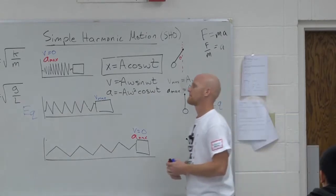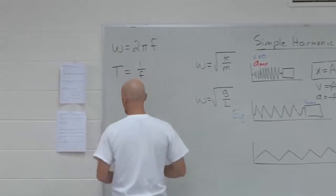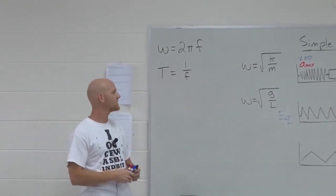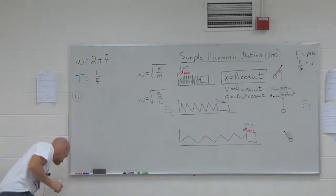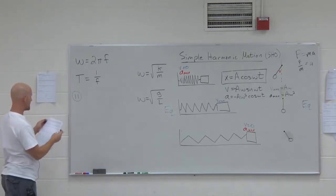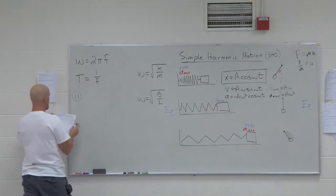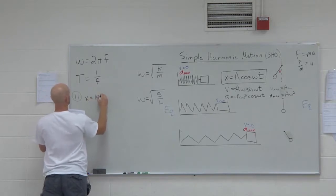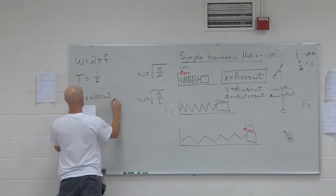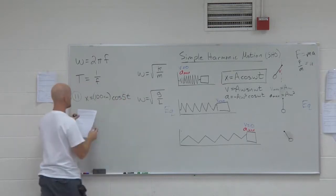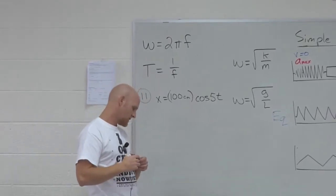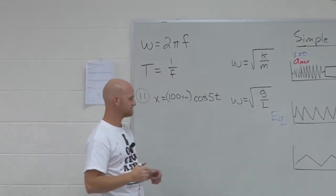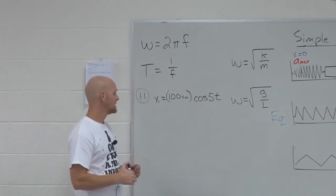These are just some things to keep in mind. Let's look at some of the types of calculations we might see with this lovely stuff. Alright, number 11. A spring with a 1 kilogram mass attached, obeying simple harmonic motion, follows the following equation of motion.